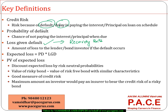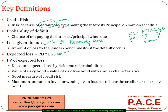In the credit risk world, we use another important definition called expected loss. When I say expected loss, it is probability of default multiplied by loss given default. Both of these are in percentage form. Probability of default is what is the chance of default, and loss given default is what proportion of money I can lose of the total. When I multiply these two, I get the expected loss.